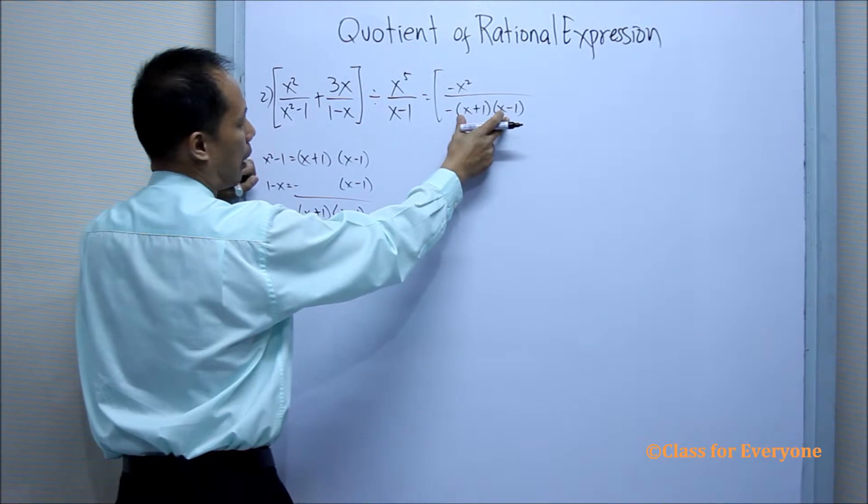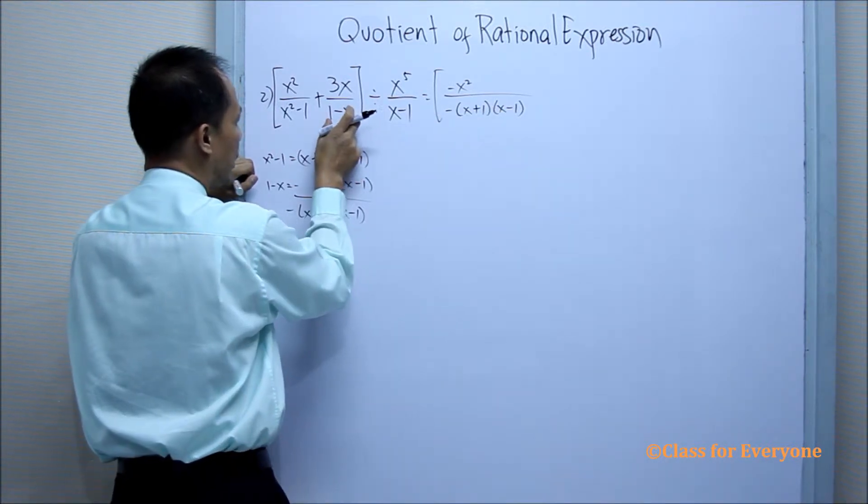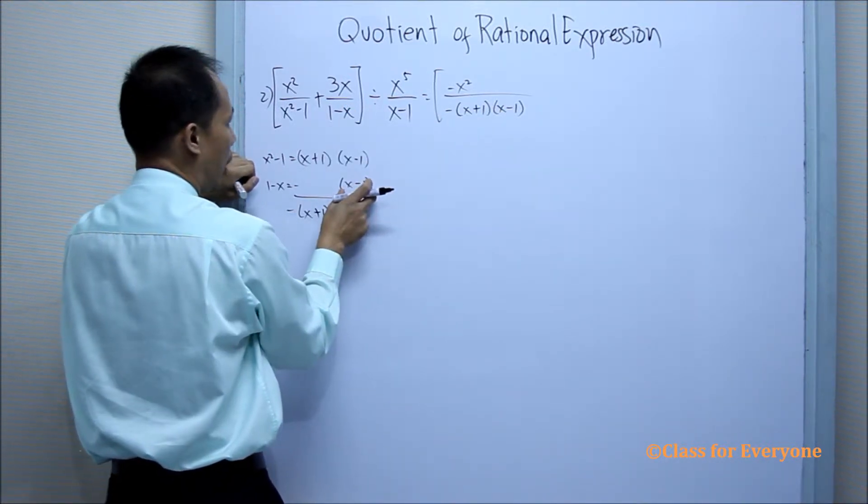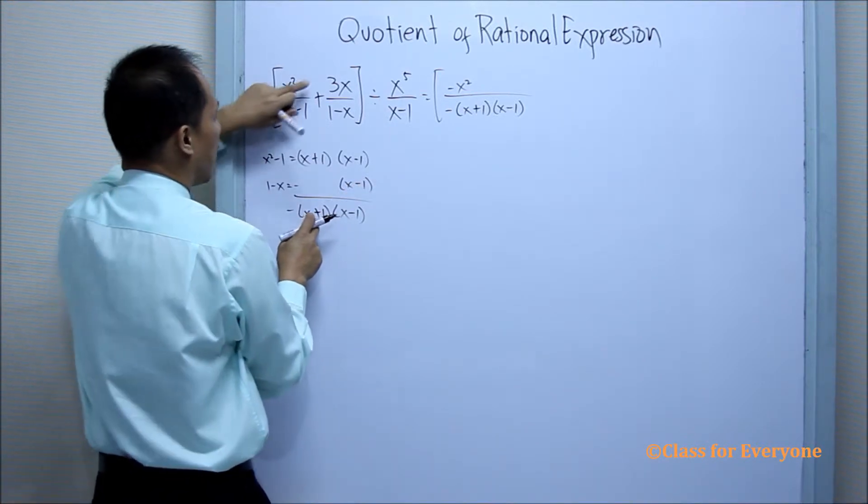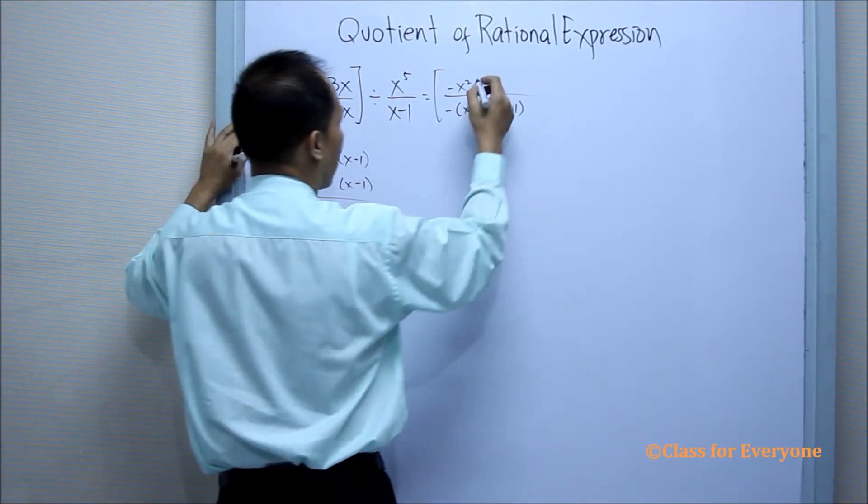Now, the LCD divided by the denominator, we have a quotient of x plus 1 times positive 3x.